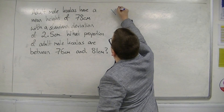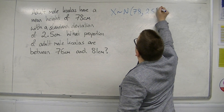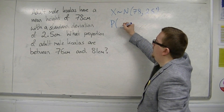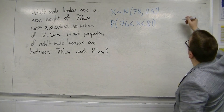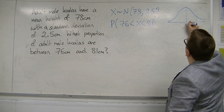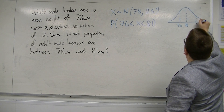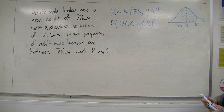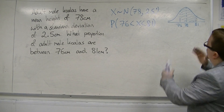We are looking at a normal distribution with a mean of 78 and a variance of 2.5 squared. We want the probability of x being between 76 and 81 centimetres. On our bell curve with a mean of 78, we want the proportion between 76 and 81 — so it's a section of the bell curve that we're considering here.